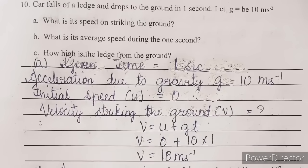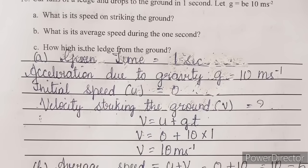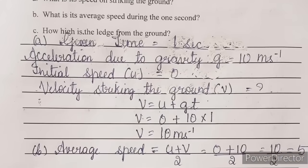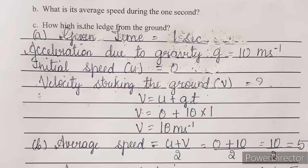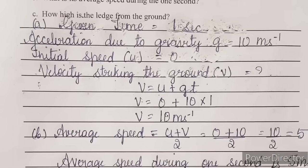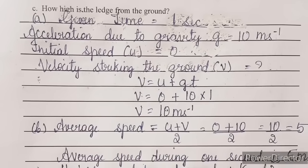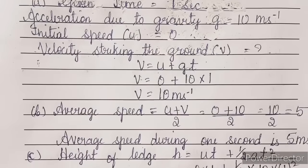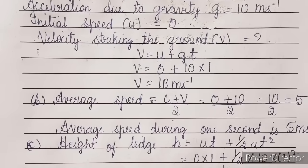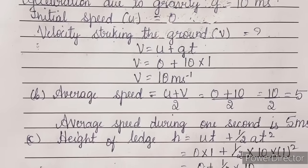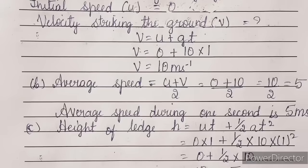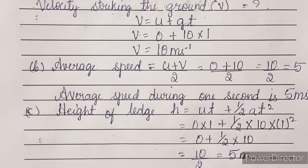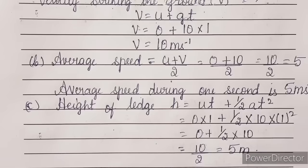Next, question number 10: a car falls off a ledge and drops to the ground in one second. Let g = 10 m/s². Questions are: (A) what is its speed on striking the ground? (B) what is its average speed during the one second? (C) how high is the ledge from the ground? With the formulas, I have written the answers. You can refer from here.